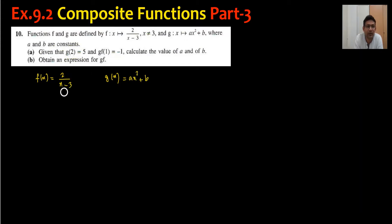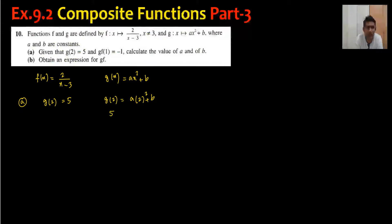We are finding the constant term, doing part (a) first. Be careful when you write g of 2 equals 5 — it means the value of x is 2. So you write g of 2: x becomes 2 squared plus b. Then g of 2 equals 5. Students often make the mistake of writing g of 5 here, so be careful. This gives 4a plus b equals 5 as the first equation.